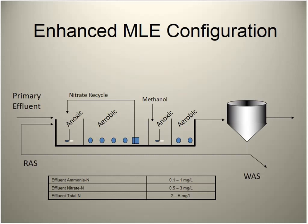The enhanced MLE duplicates the anoxic and aerobic sections — doing it twice to ensure a sufficient carbon source. Methanol or a proprietary carbon source like micro-C is added. A final aerobic zone ensures no denitrification carries into the clarifier. The modified MLE achieves effluent total nitrogen of 6–10 mg/L, while the enhanced version reaches 2–5 mg/L.